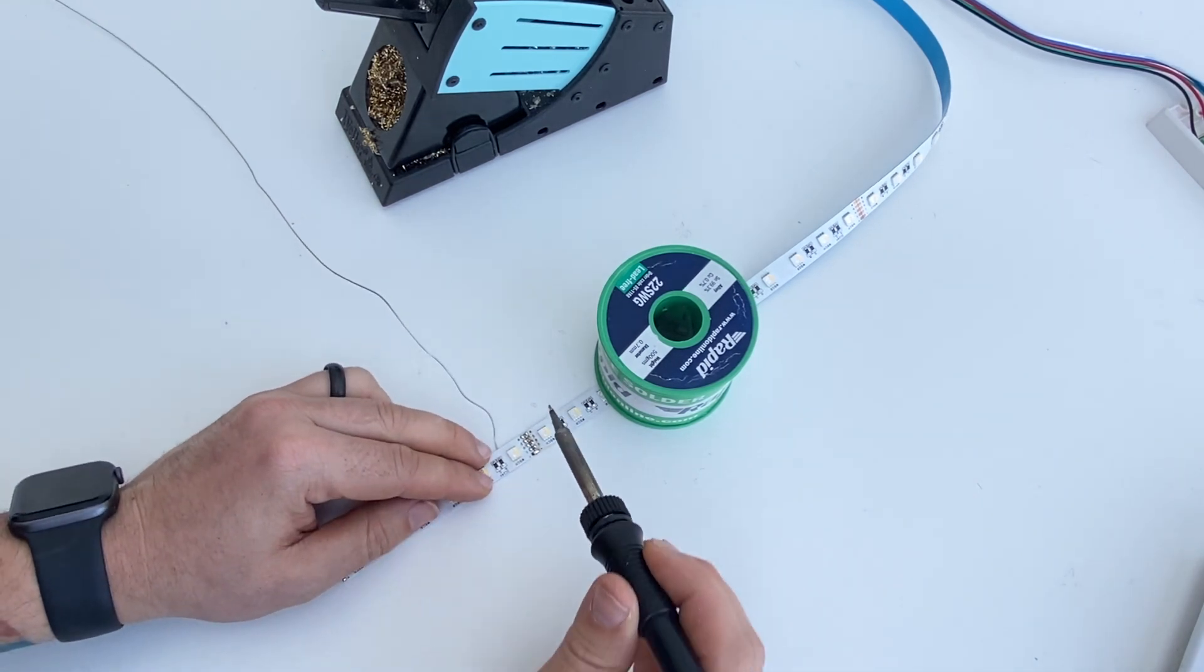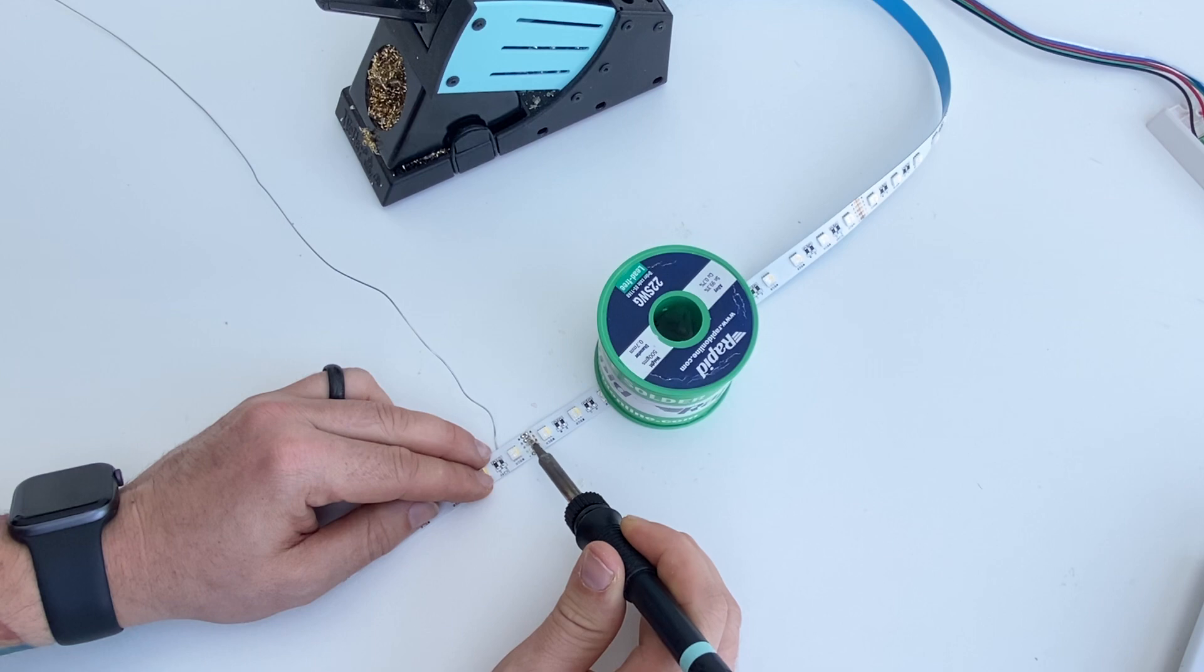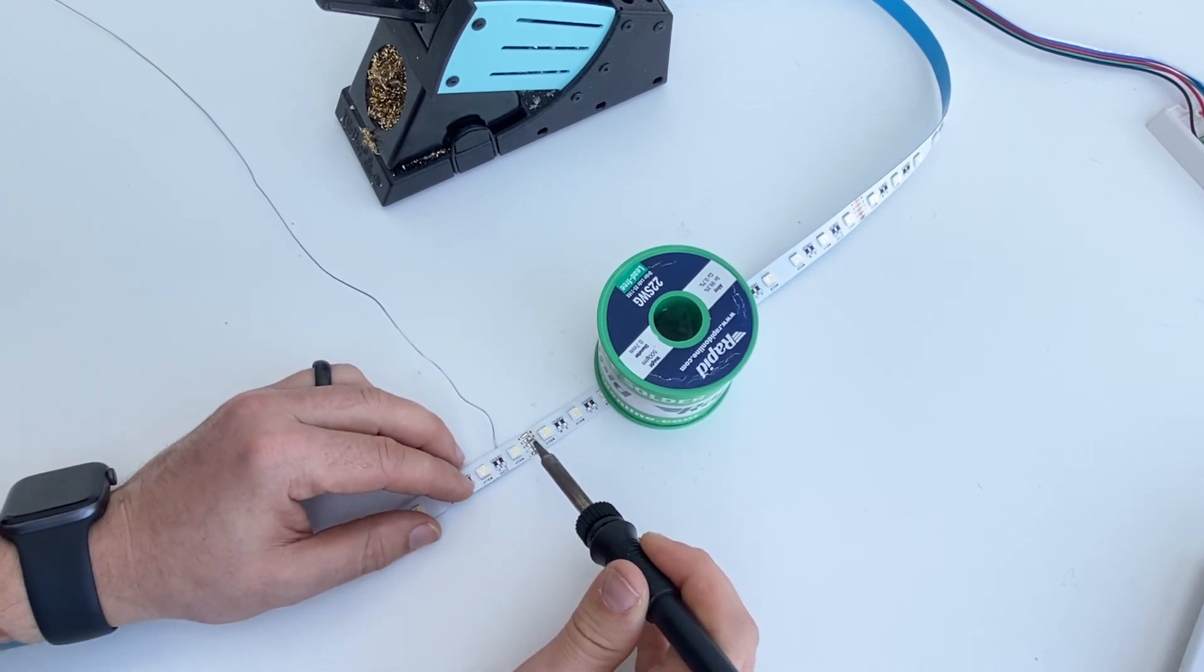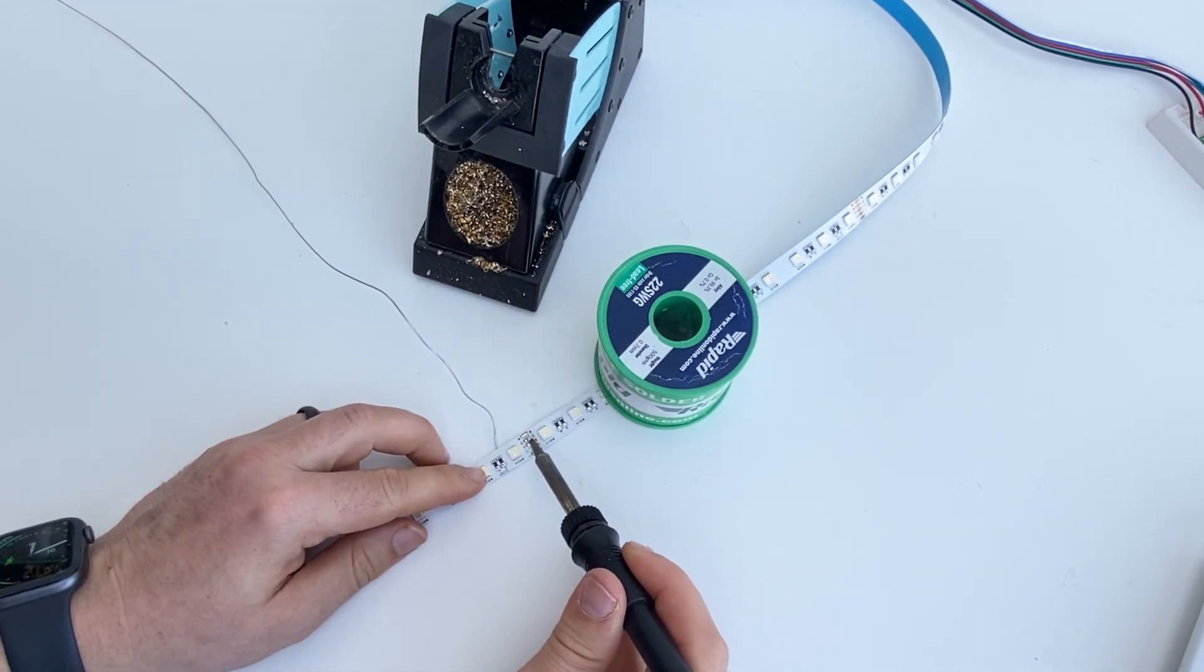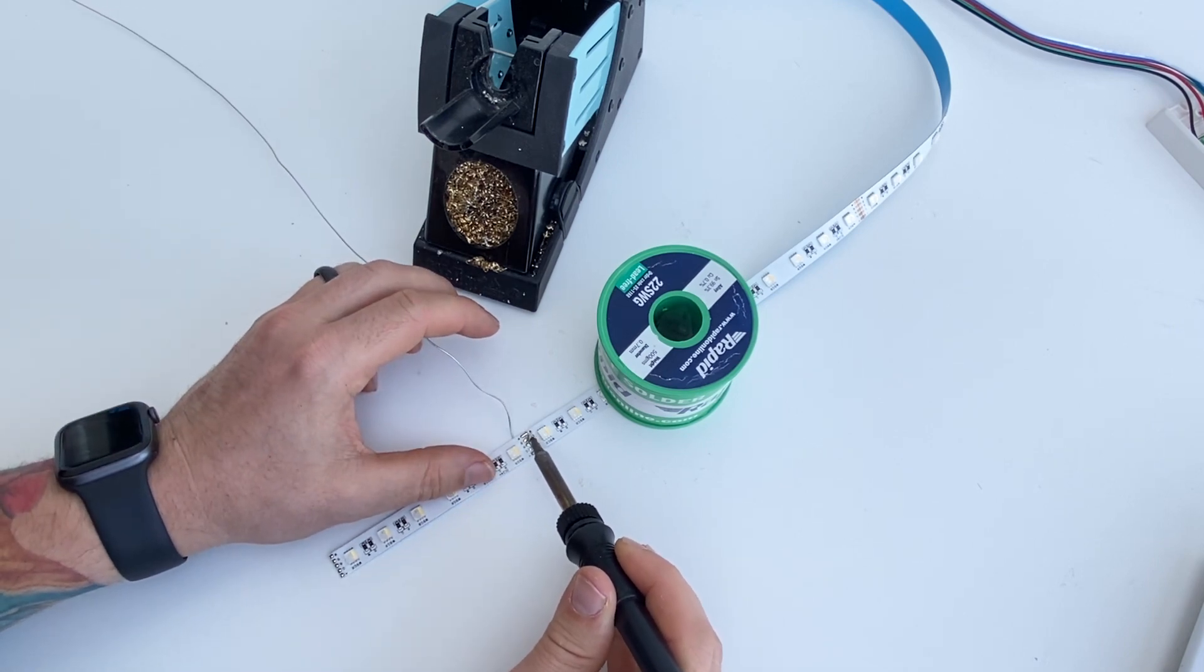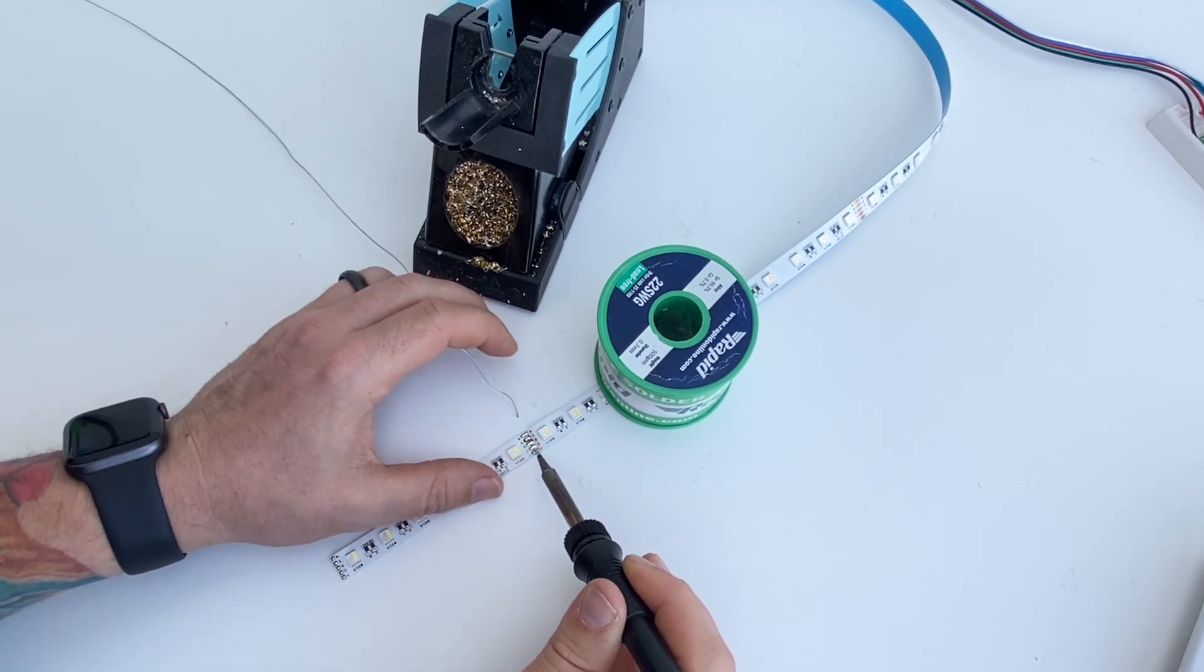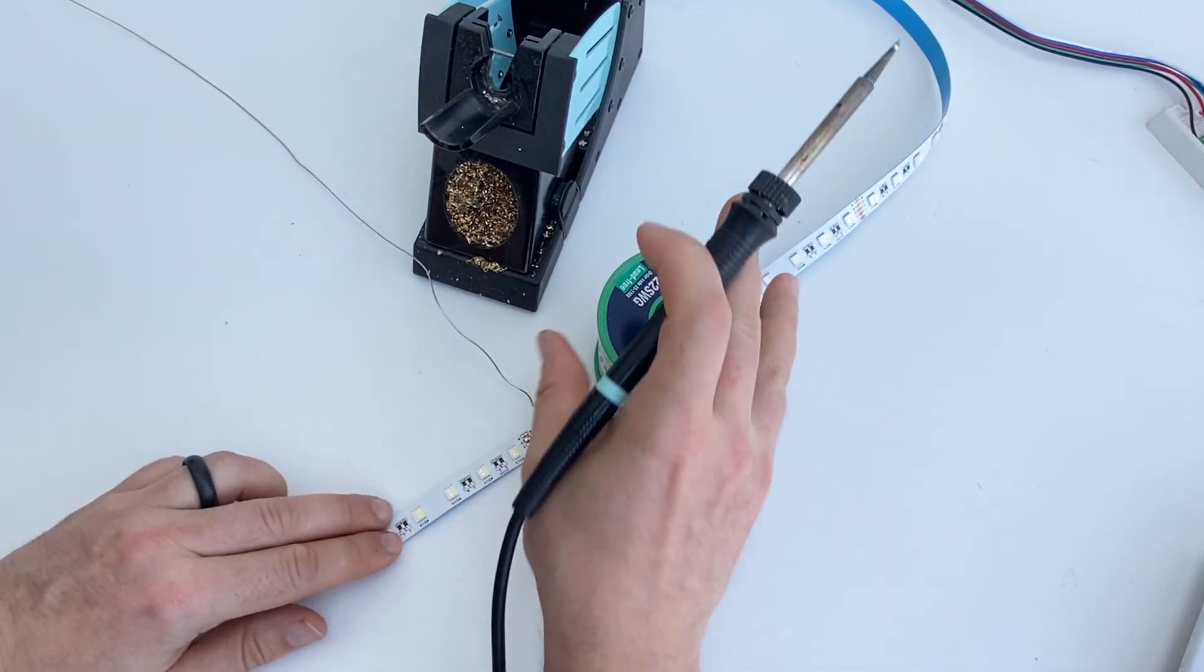All you need to do is just add a little bit more solder just to bridge the connection there, and just repeat all the way down, just adding solder, cleaning solder as you go.